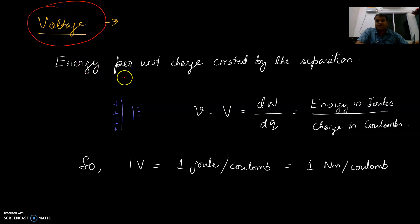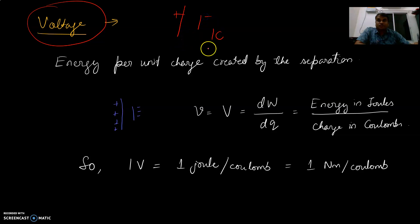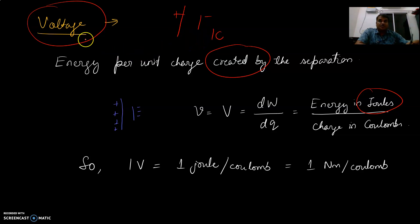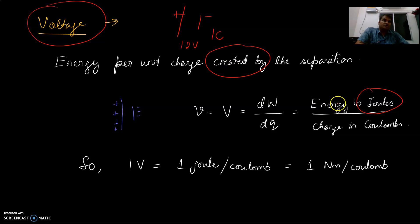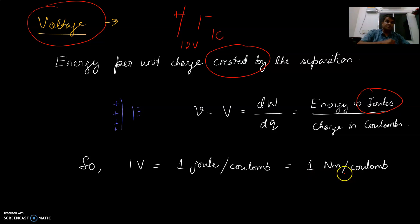We define voltage as energy per unit charge. Suppose 1 kilogram of charge is separated into positive and negative; the energy in joules created because of that separation is called the volt. So if 1.2 joules of energy is created by separating 1 kilogram of charge, it is a 1.2-volt battery. If it is 12 joules, it is a 12-volt battery. We can write: 1 volt equals 1 joule per kilogram, or 1 newton-meter per kilogram.